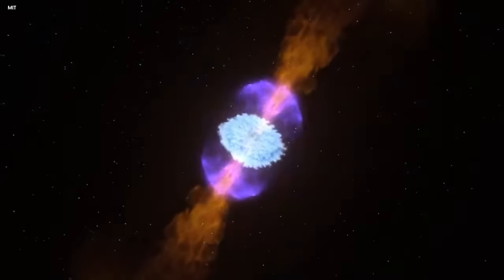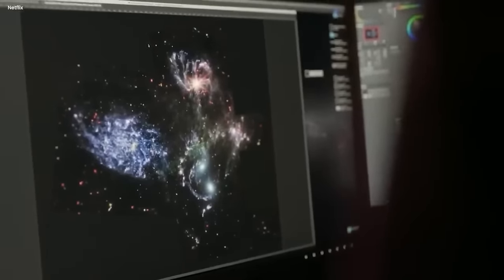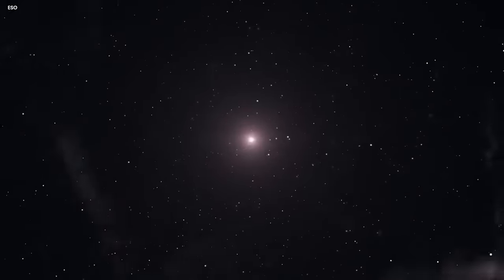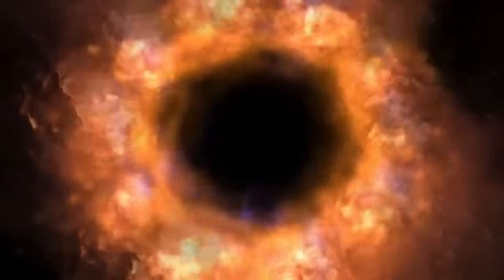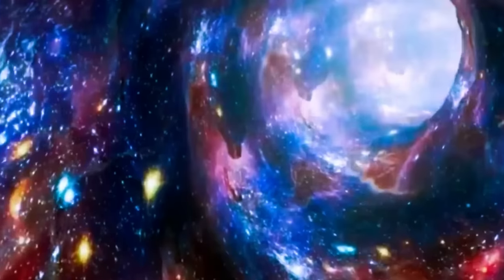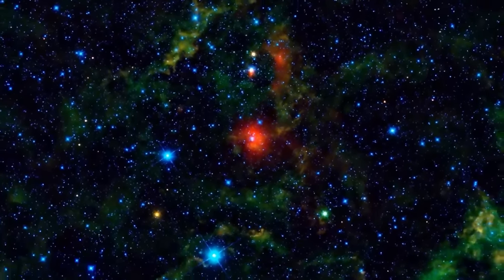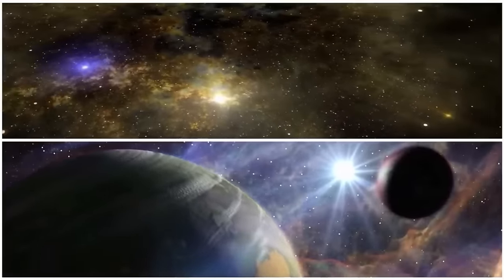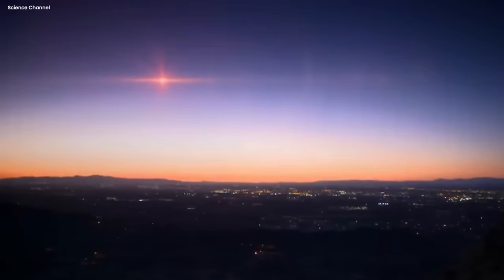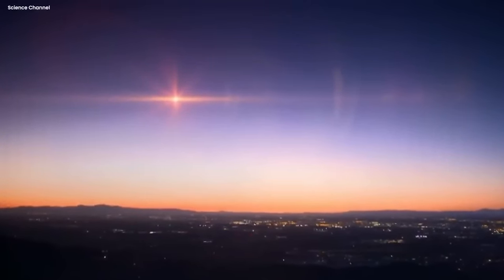The knowledge we have about Betelgeuse's distance comes from various sources, including the Hipparcos astrometric satellite. This advanced tool has offered crucial insights into the vast distances separating celestial bodies. Yet differing data sources sometimes present discrepancies. While the Hipparcos satellite indicates Betelgeuse to be around 430 light-years away, other measurements suggest a distance closer to 642.5 light-years. These disparities emphasize the complexity and challenges of accurately measuring celestial distances, underscoring the ongoing refinement and advancement in astronomical techniques.